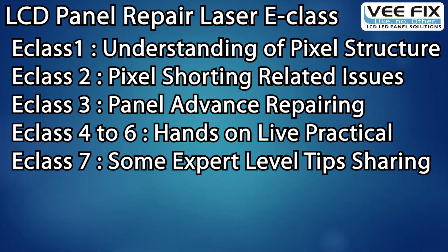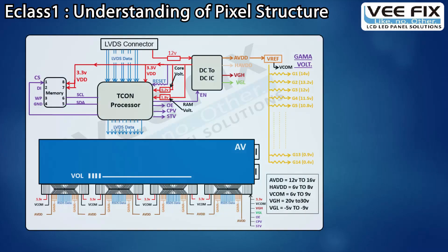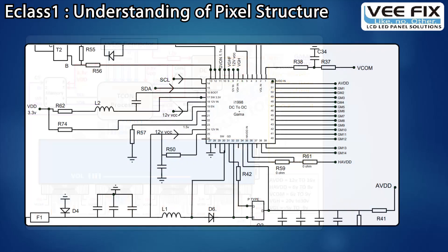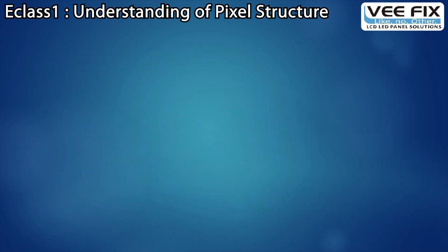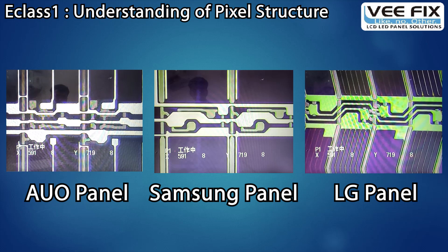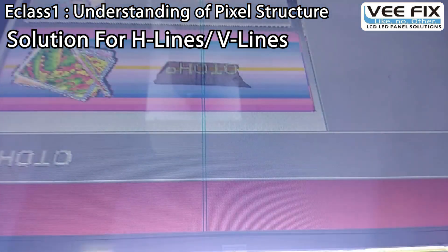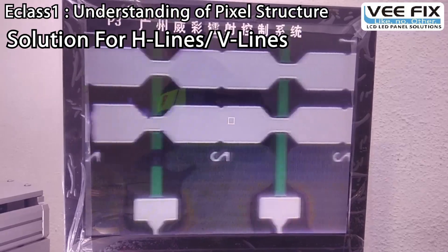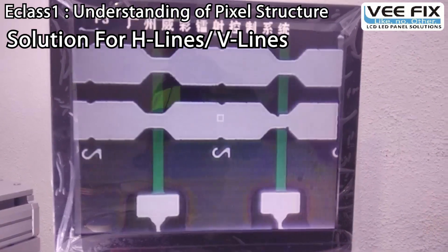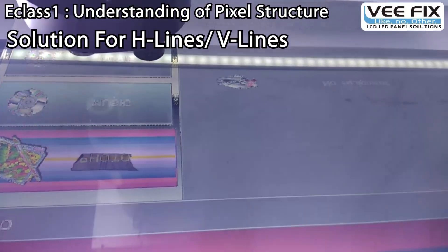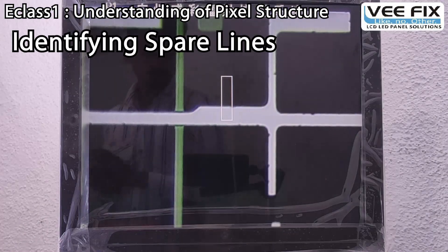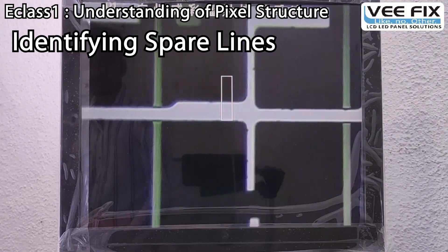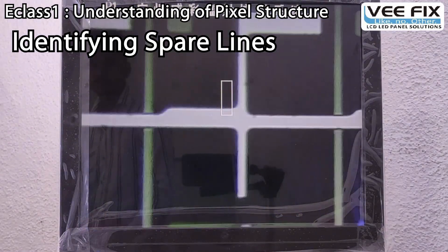Let us take a tour of all 7 E-classes. In the first E-class we will give a short revision of our previous training. Then we will explain how to understand pixel structures of different brand panels, how to remove V-lines and H-lines, how to remove V-lines coming after bonding without doing rebonding, how to identify spare lines, and if there is no spare line, how to use other lines as a spare line. All of this will be explained practically.